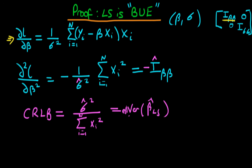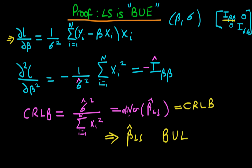Since least squares estimators achieve the Cramér-Rao lower bound, and no unbiased estimator can have a variance lower than that bound, if an estimator equals the bound it must have the lowest variance among all unbiased estimators. This implies that beta-hat least squares is BUE — the best unbiased estimator — not just the best linear unbiased estimator, dropping the linearity restriction entirely.